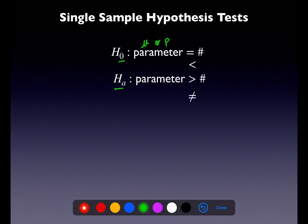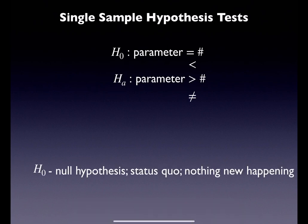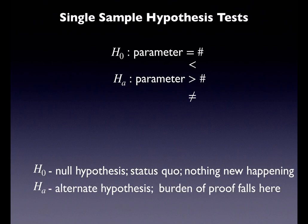You have the equal sign on the null, and either a less than, a greater than, or a not equals to on the alternate. You'll determine that symbol based on the wording of the problem. Your null is the status quo — nothing new is happening, we're assuming it's true. If you're testing a new medicine, you assume it doesn't work. The burden of proof is always to prove that it does work. The alternate is where the burden of proof falls, and the null and alternate together should be competing claims leading to different conclusions.